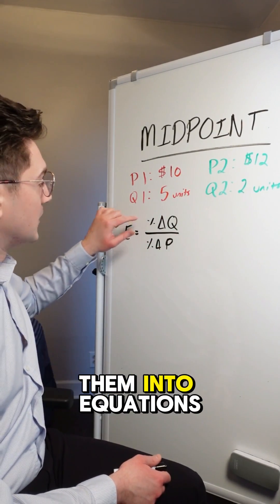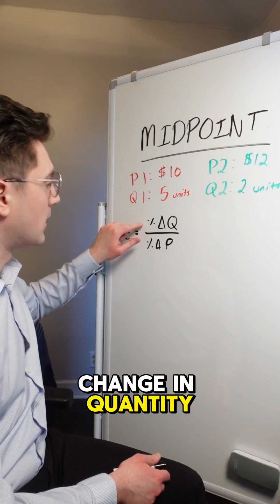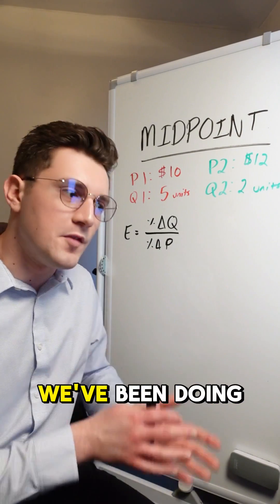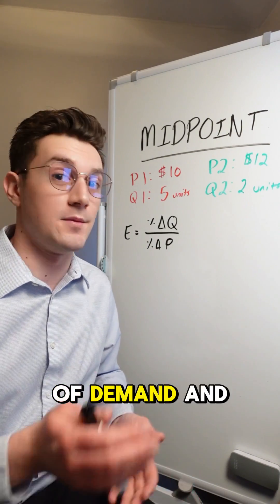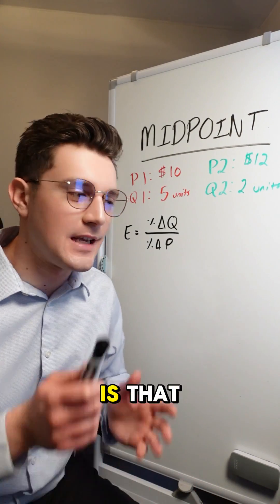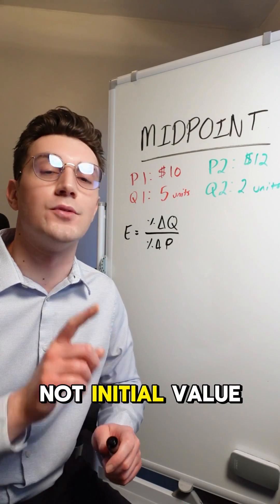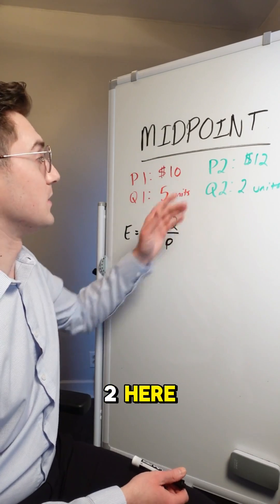we're going to plug them into equations for the percent change in quantity and the percent change in price to calculate elasticity. This is no different than what we've been doing with price elasticity of demand and supply. The difference here is that we're going to base that percent change on the average, not initial value of the change from one to two here.